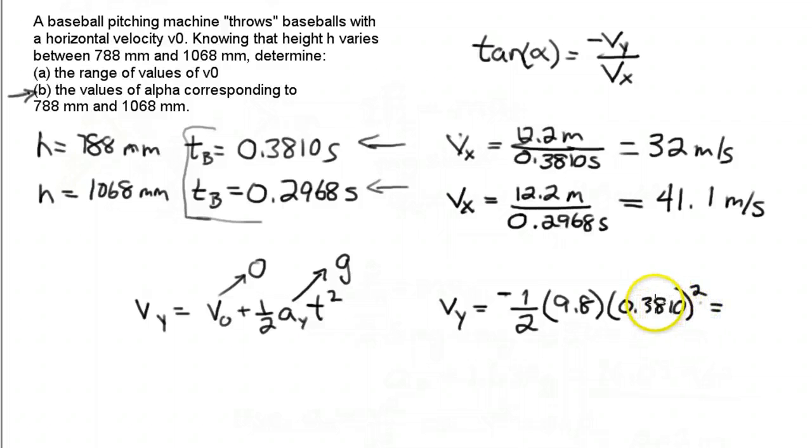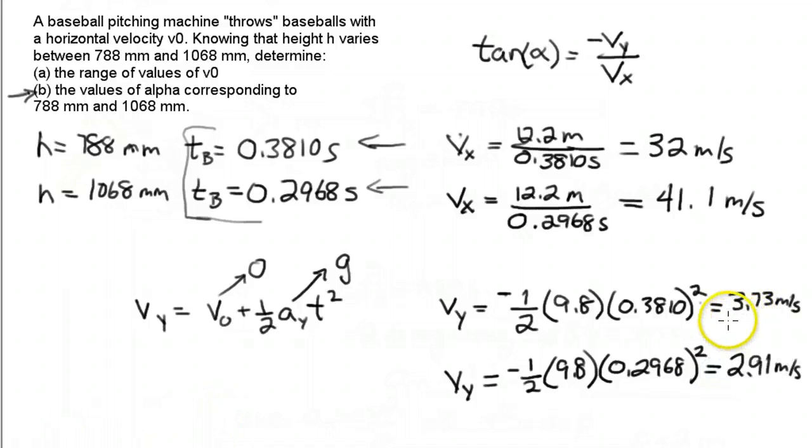In one case I'm going to have to calculate that out. Then the second case, we've got 9.8 meters per second squared and here we've got 0.2968 seconds squared. Let me calculate that. There they are. The first one is 3.73 meters per second, and the second one is 2.91 meters per second.